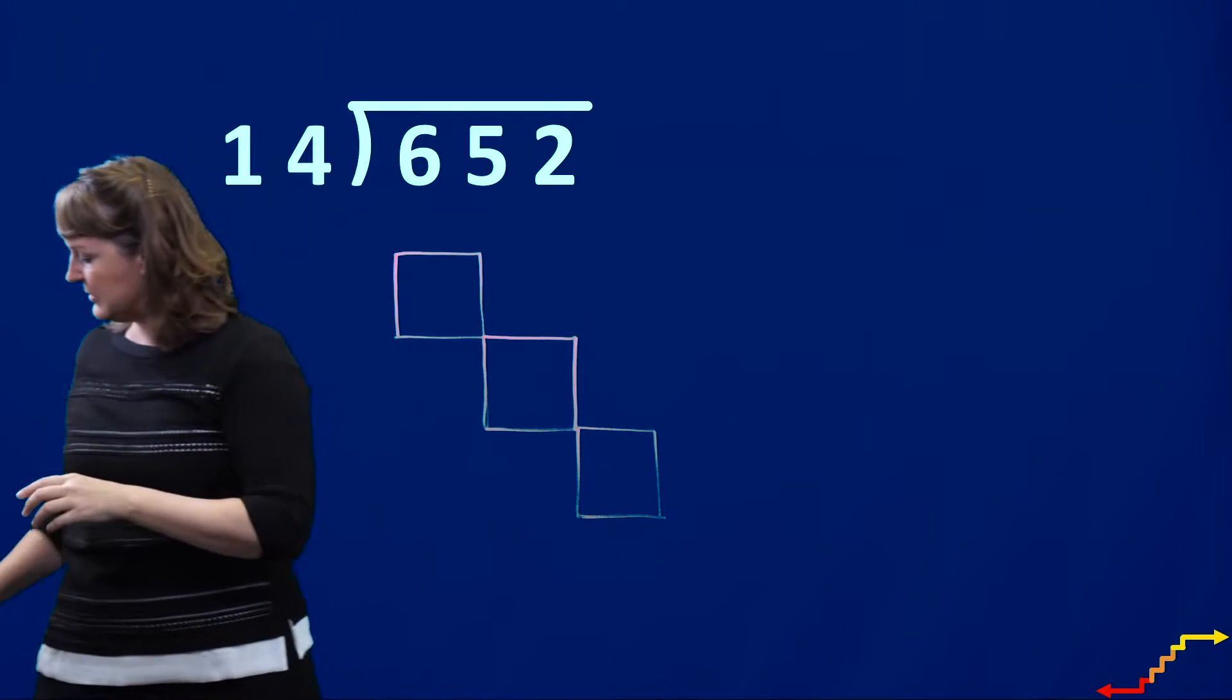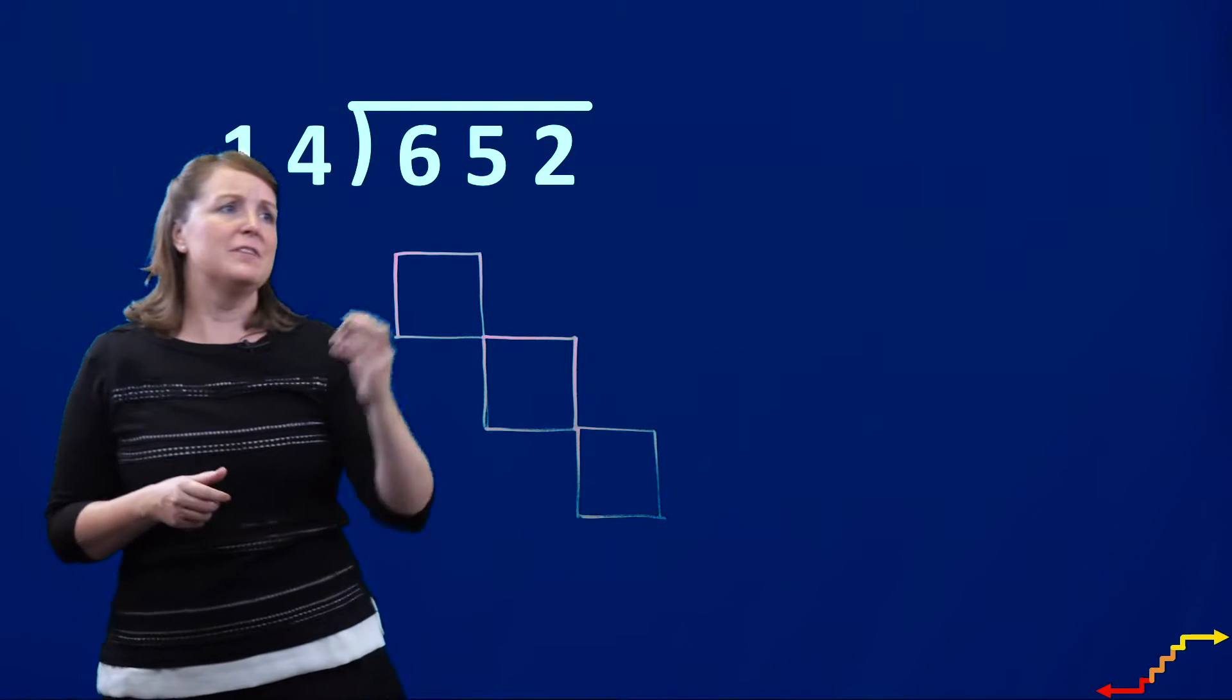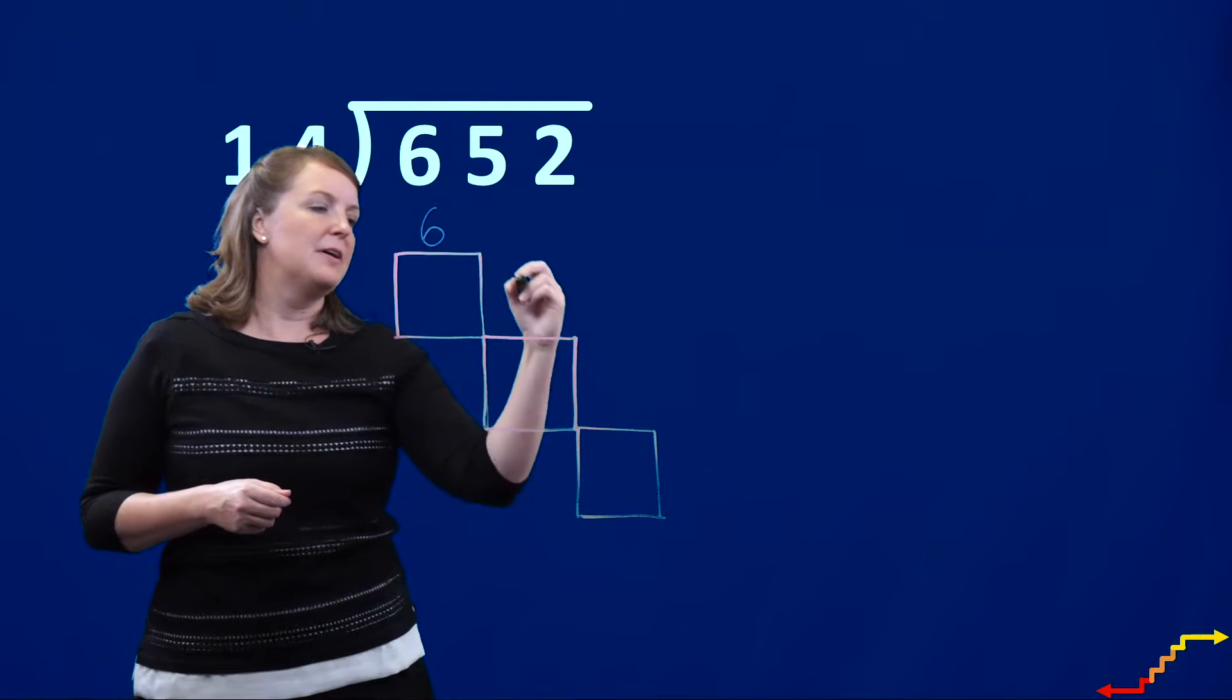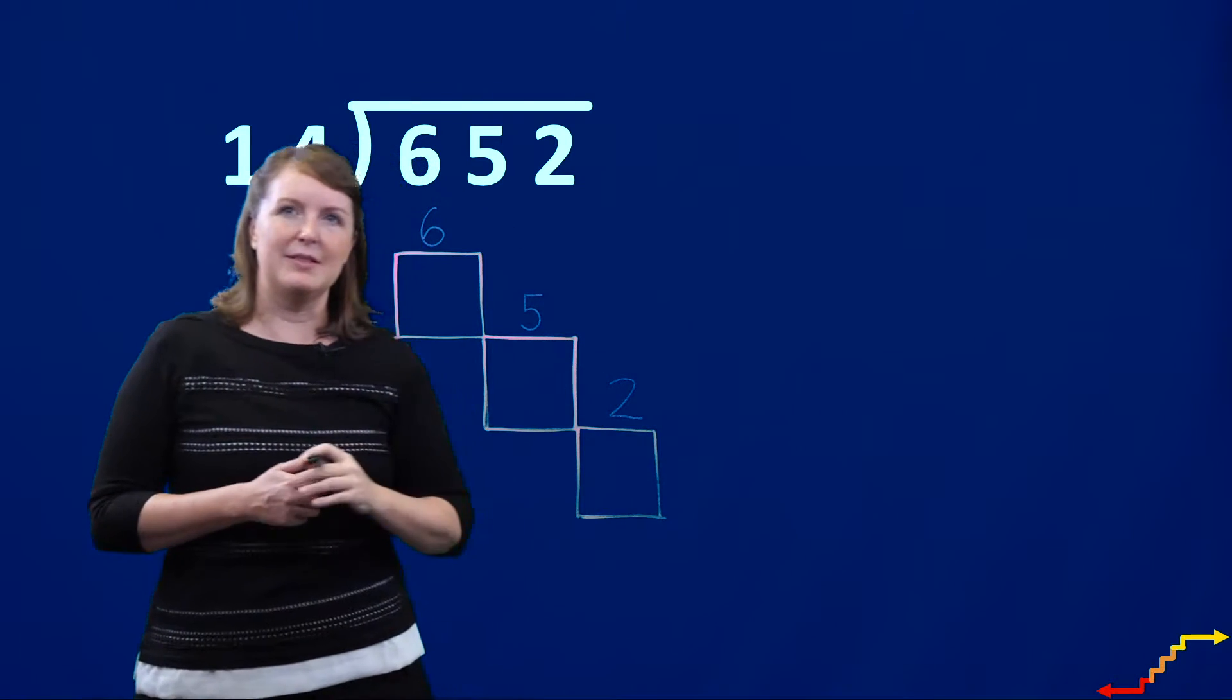And I'm dividing that by my divisor. So my three digit dividend was 652, and I'll write that right there.